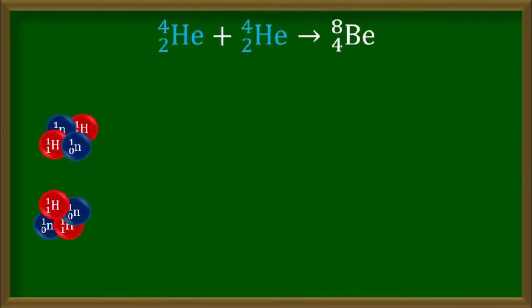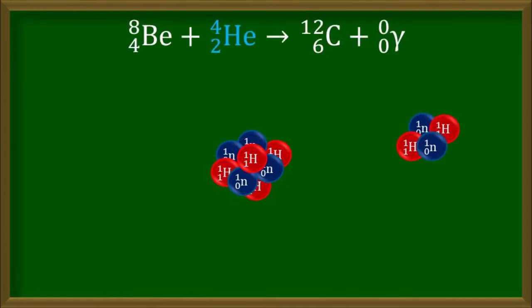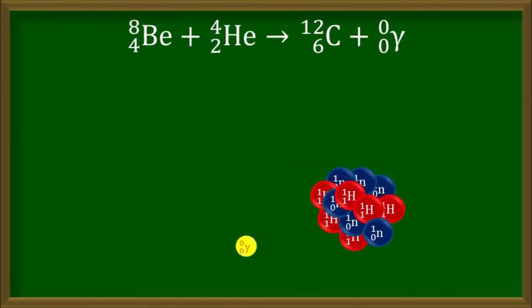The first step involves the fusion of two alpha particles, helium-4 nuclei, to form beryllium-8. Then the newly formed beryllium-8 fuses with another alpha particle to form a carbon-12 nucleus. This reaction releases energy in the form of gamma-ray photons.